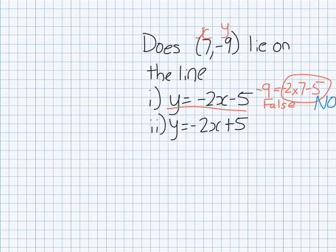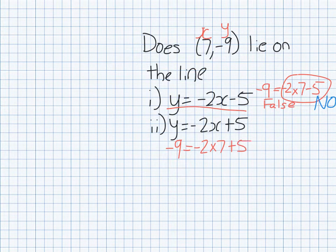If we look at the second line, y equals minus 2x plus 5, we do the same thing. Substitute y, substitute x, and see if we get a true statement. Now, minus 2 times 7, which is minus 14, plus 5, does equal minus 9. This is a true statement.